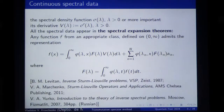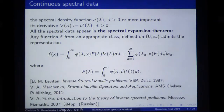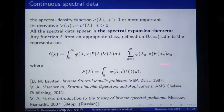Why is this spectral expansion theorem so important? It's difficult to explain in just words, but for example if one wants to compute the Green's function, the spectral expansion theorem can be used for this. In fact, this is probably the most important fact of the spectral theory — the spectral expansion theorem. We see that we need the whole discrete spectral data and the continuous spectral data, which consists basically of the derivative of the spectral density function.